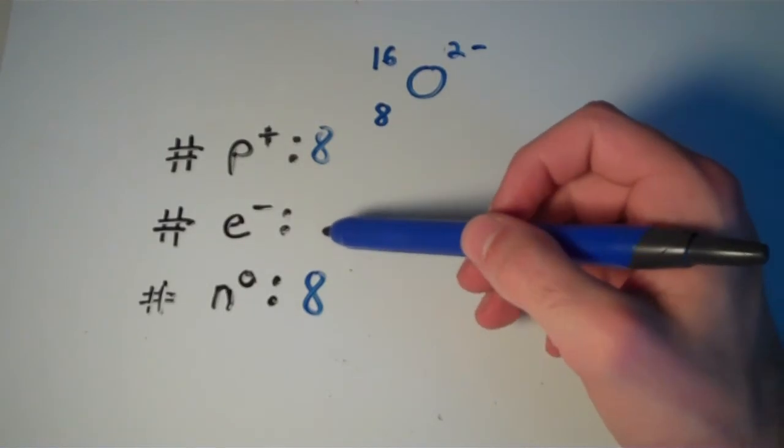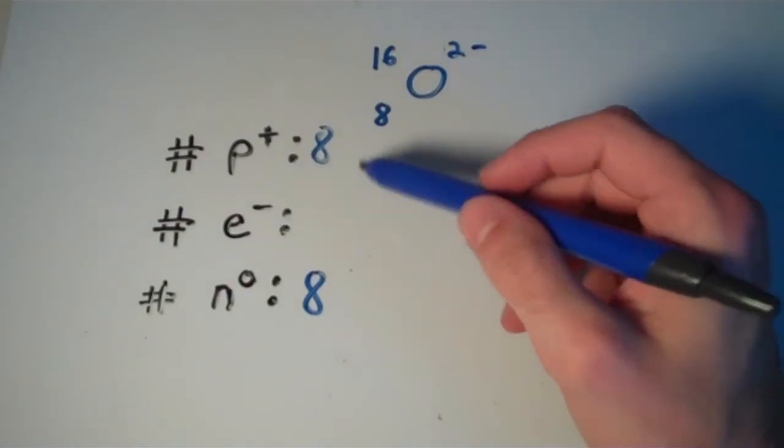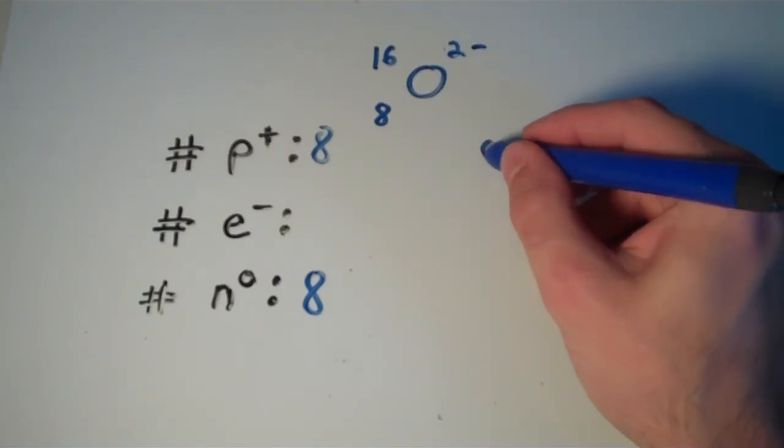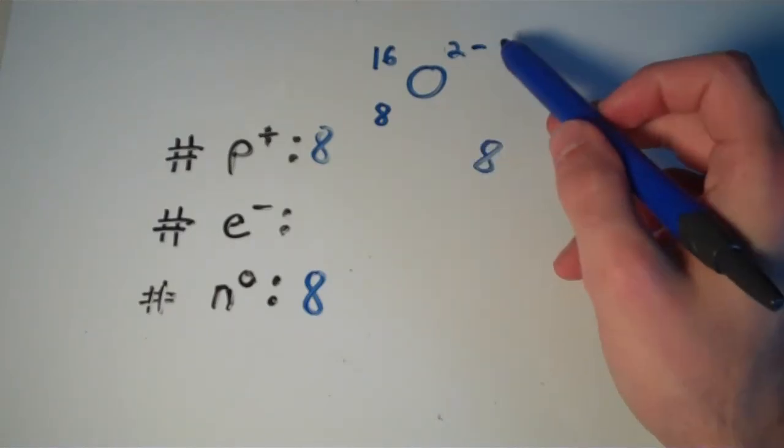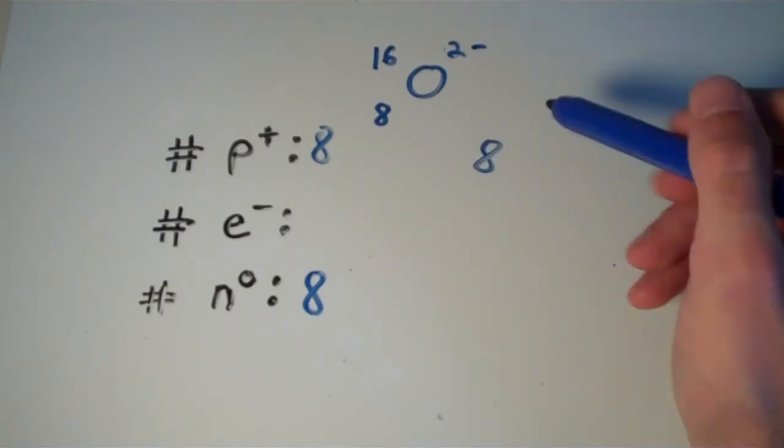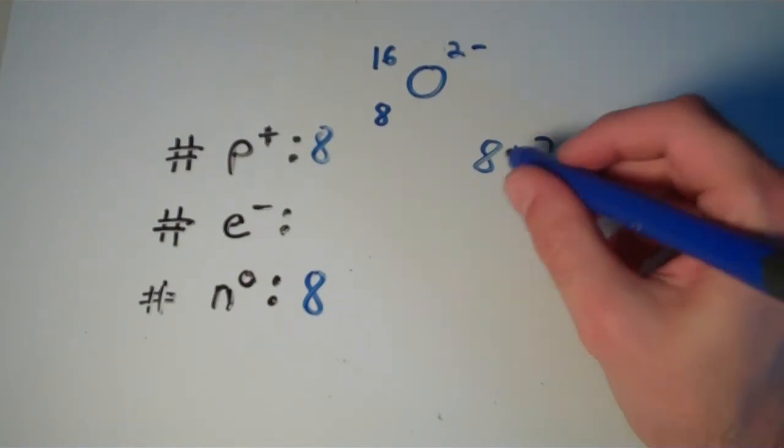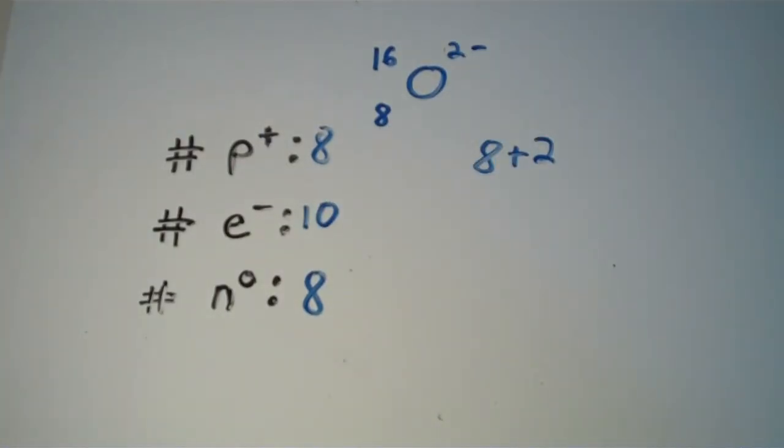So, if the number of electrons were equal to the number of protons, in other words, if this chemical species was neutral, then we would have 8 electrons. But, since this is charged, this has a 2 negative charge, that means it has 2 more electrons than the neutral atom. So, 8 plus 2, we get 10. This has 8 protons, 10 electrons, and 8 neutrons. So, there you go. Hope this helps.